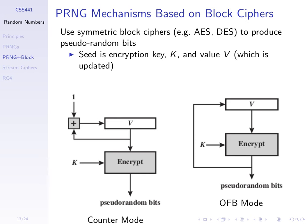Another approach is output feedback mode (OFB): we encrypt the initial value using the key, take the ciphertext and encrypt it again with the same key, and keep feeding ciphertext back as input. The ciphertext that comes out at each stage is random, and encrypting a random input again gives a different random output. The seed is again the combination of the key and the initial value V.